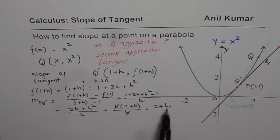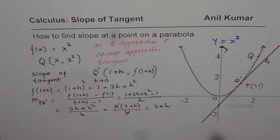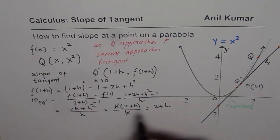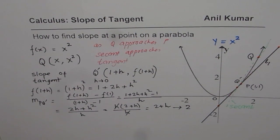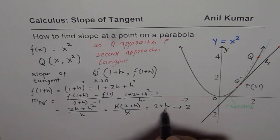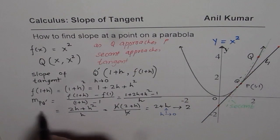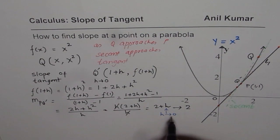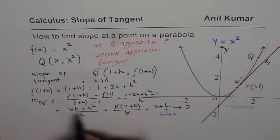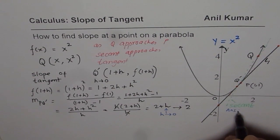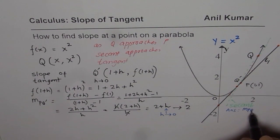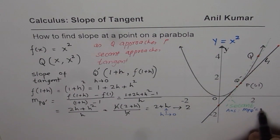Now, since H is very small, we can say that this slope approaches the value 2. Since H is very small, H approaches 0, the slope approaches 2. And therefore, we have our answer, that is, the slope of this tangent MPQ dash is equals to 2.